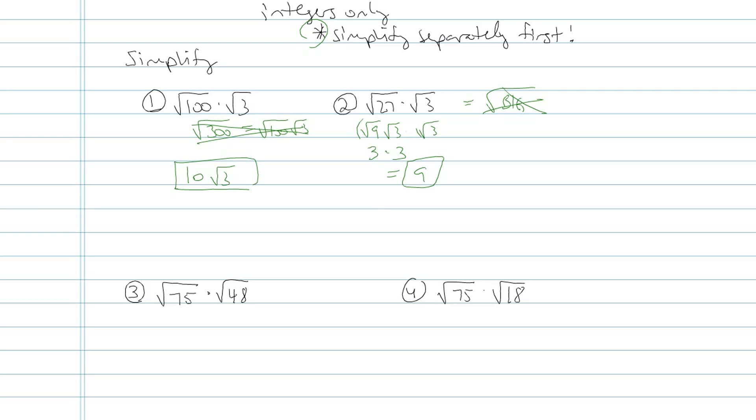Problem number 3 says square root of 75 times square root of 48. Now I certainly don't know what the product of 75 and 48 is, I know it's some big number. I don't want to work with it. 75 and 48 are much more approachable, much more friendly numbers.